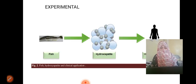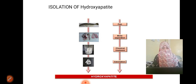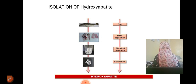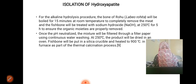For the experimental work, first we separate hydroxyapatite from fish bone and then use it in clinical applications. For the isolation of hydroxyapatite, we separate the bone from the fish, treat it with chemicals, and then separate the hydroxyapatite through a calcination process.